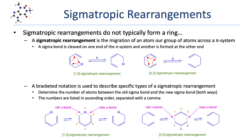A bracketed notation is used to describe sigmatropic rearrangements based on the number of atoms involved. Determine the number of atoms between the sigma bond that's cleaved and the newly formed sigma bond, traversing in both directions. The two numbers are then listed in ascending order, separated by a comma.